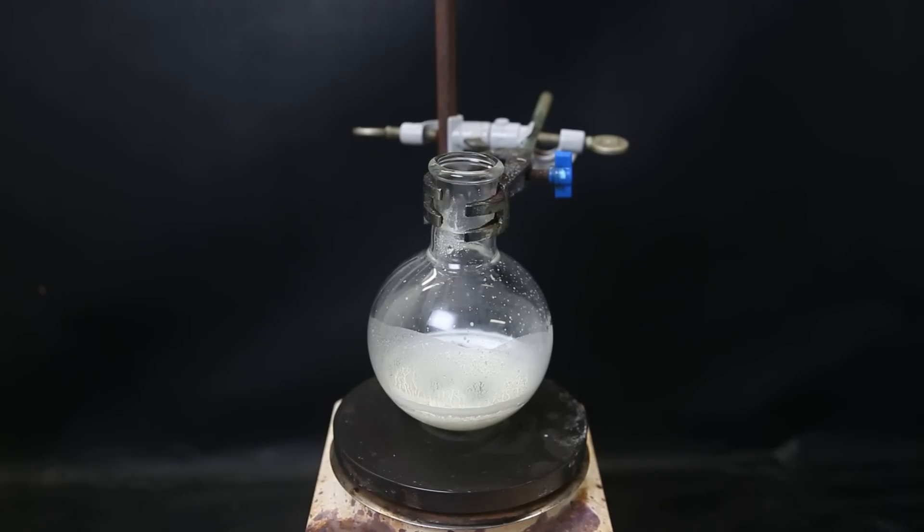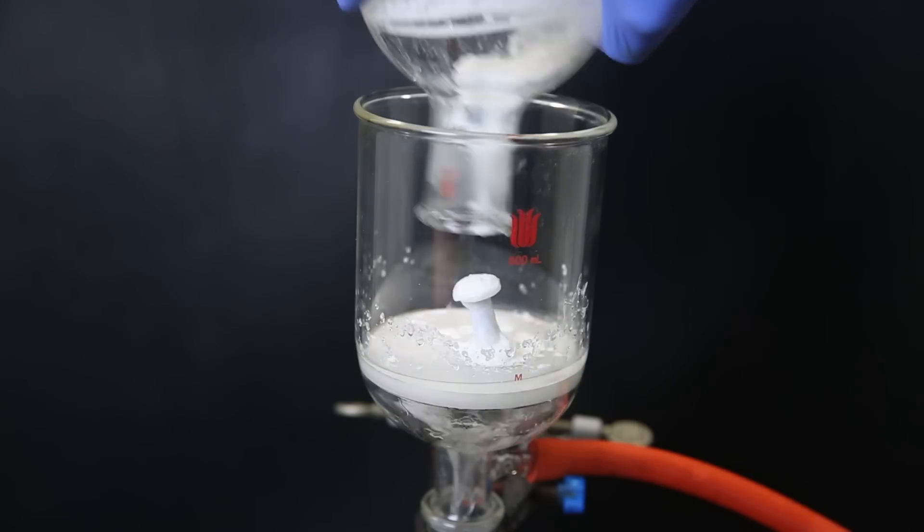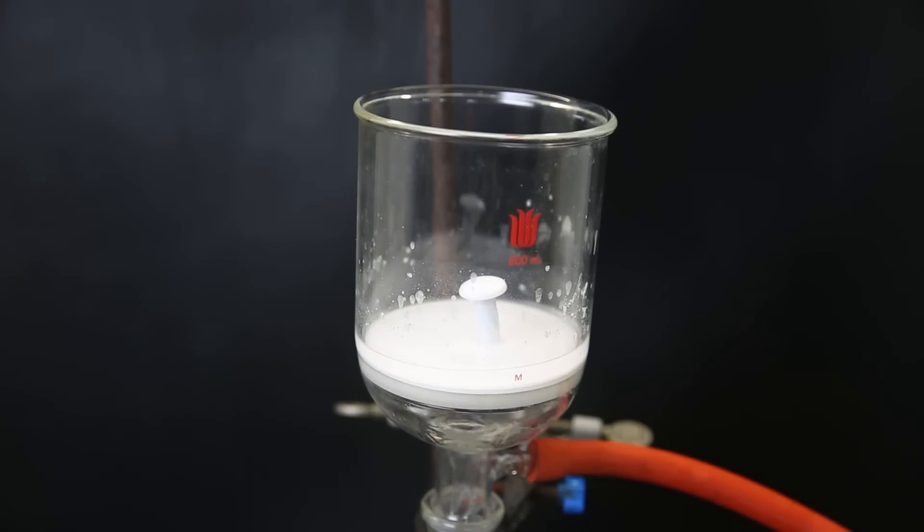When I come back the next day, a bunch of white solid has precipitated, which should be the bisulfite adduct. I set up a glass frit with a filter paper again and filter it all through. I wash it out and down with ether to remove the impurities that are still soluble in the ether, while the benzaldehyde stays behind on the filter as the bisulfite adduct.